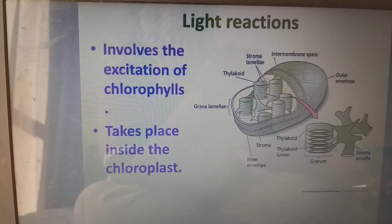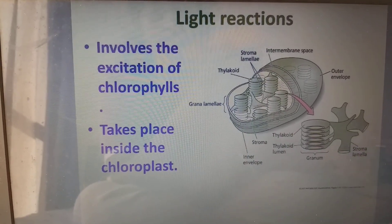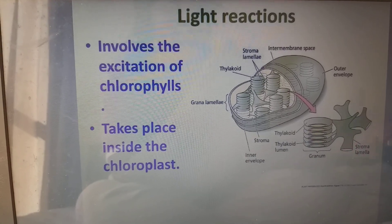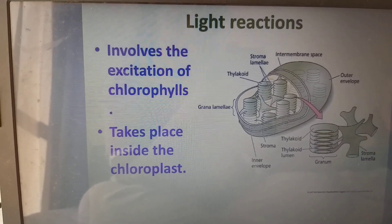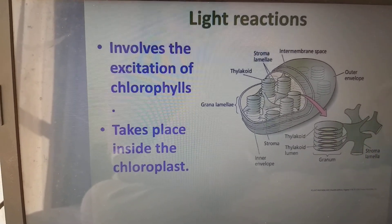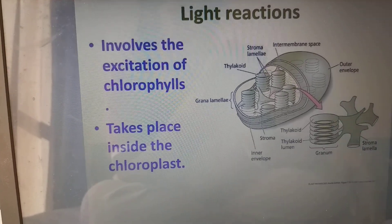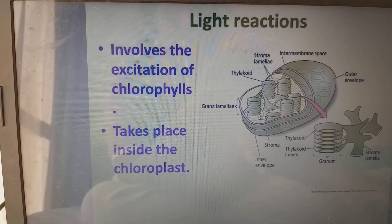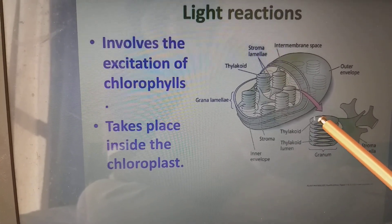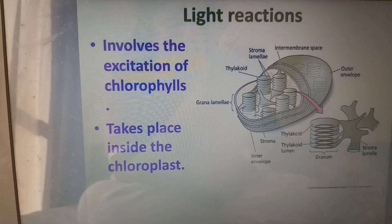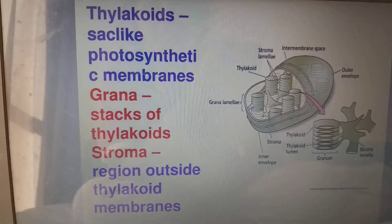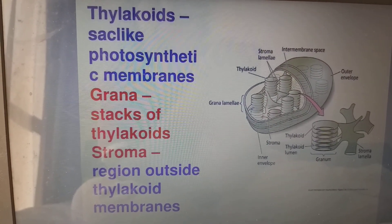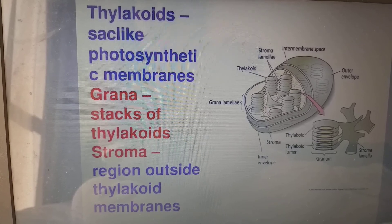So what does the light reaction involve? It involves the excitation of chlorophyll. For excitation we need a high amount of energy, which is provided by sunlight. The light reaction takes place inside the chloroplast on the thylakoid membrane. Thylakoids are nothing but sac-like photosynthetic membranes. Grana are stacks of thylakoids, and the stroma is the region outside the thylakoid membrane.